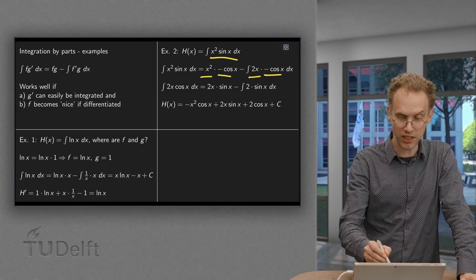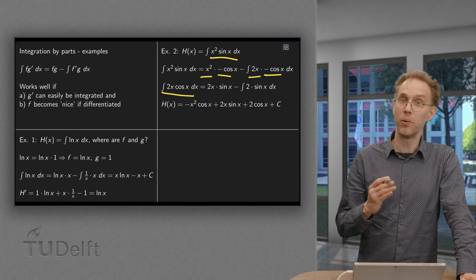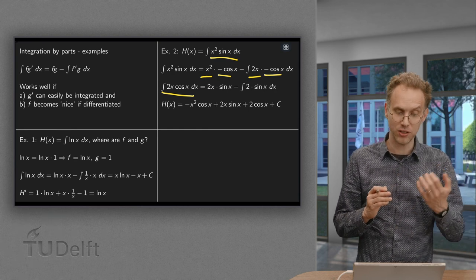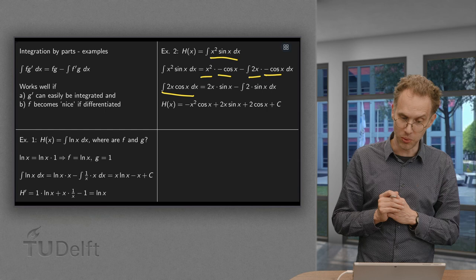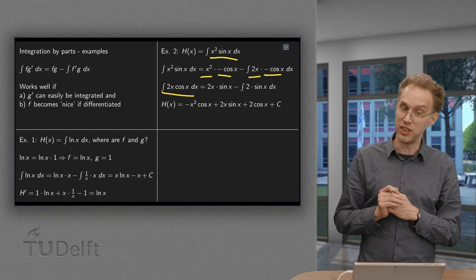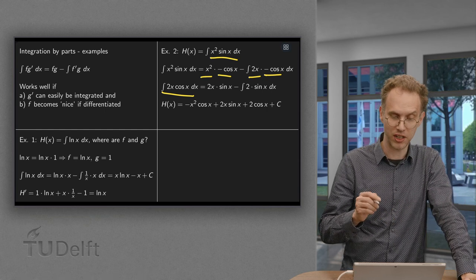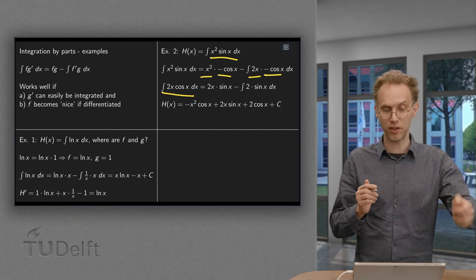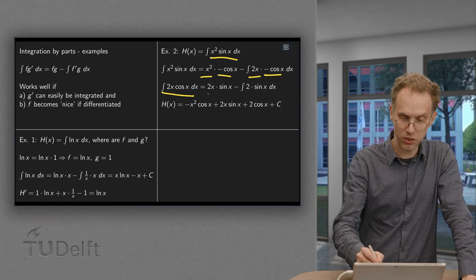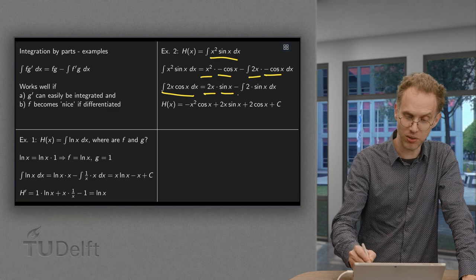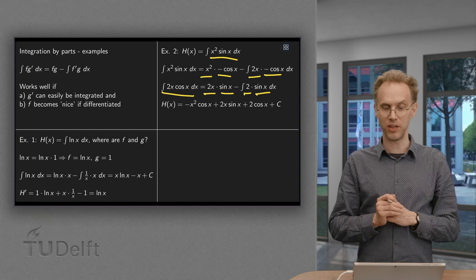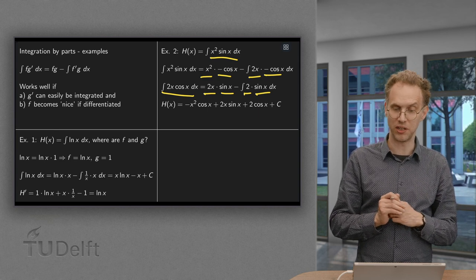So we just do integration by parts again, where f equals 2x and g prime equals cos(x). Since the antiderivative of cos(x) is sin(x) and the derivative of 2x is 2, we get 2x·sin(x) minus the integral of 2·sin(x). Now the new integral has become easier.